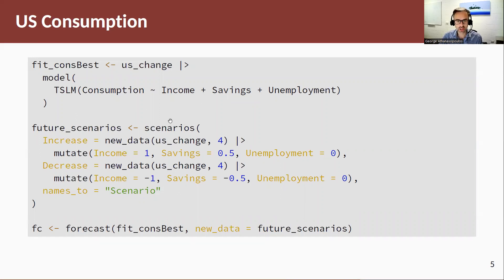What we do is use the scenarios function, and within this scenarios function we build the scenarios using the new_data function. We need to pass in the symbol we are considering and how many steps ahead we're going to forecast — in this case four steps ahead — and we tell it how we want the variables to be mutated. In this case we want income to have a 1% increase for all four steps, savings will have a 0.5% increase, and no change in unemployment. We'll call this our optimistic or increasing scenario.